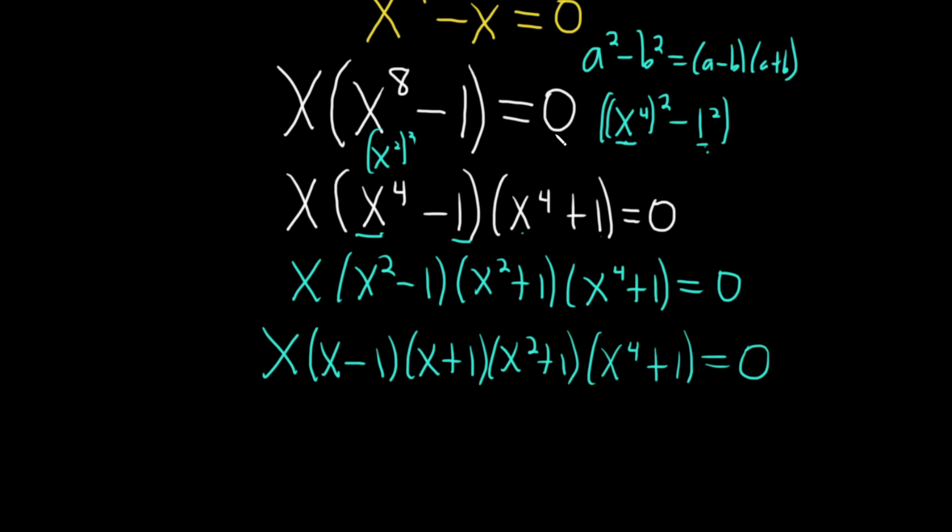So using the difference of squares formula three times. Again, the first time we had x to the eighth, we thought of it as x to the fourth squared because two times four is eight. So that's your a, that's your b. So it's a minus b, a plus b. There it is right there, a minus b, a plus b. Then we apply it to this. Think of this as x squared squared. So it's x squared minus one, x squared plus one. This hangs out. Then you do it again. It's x minus one, x plus one.